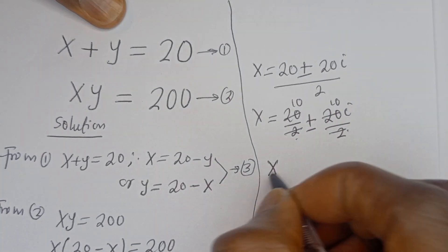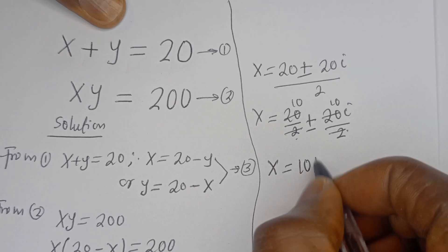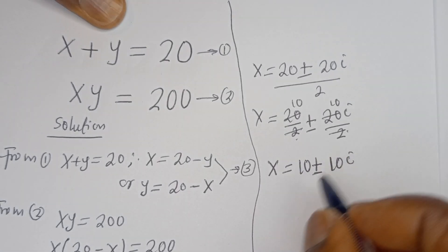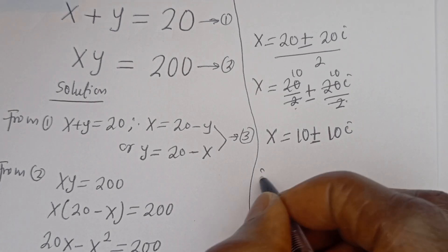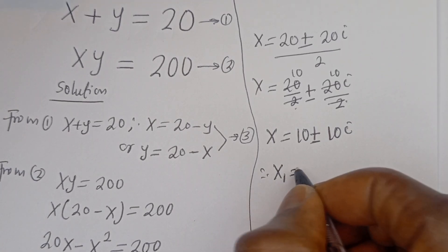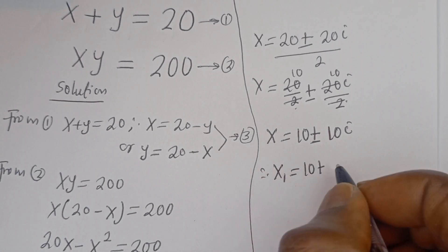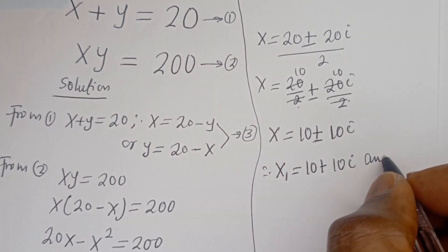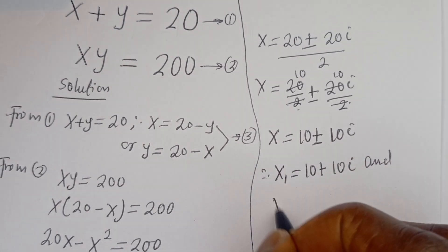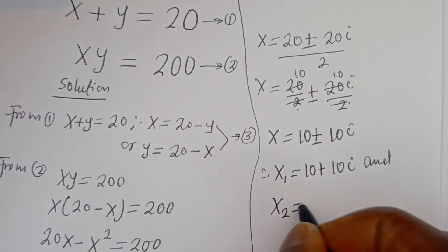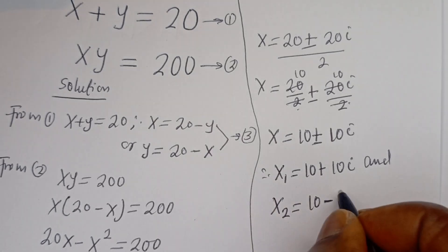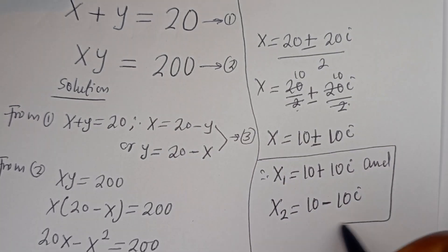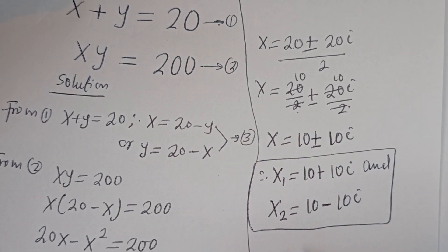X is equal to 10 plus or minus 10i. Therefore X1 is equal to 10 plus 10i, and X2 is equal to 10 minus 10i. These are the values of X. Now let's solve for Y.